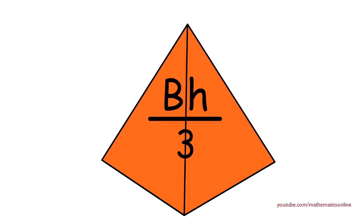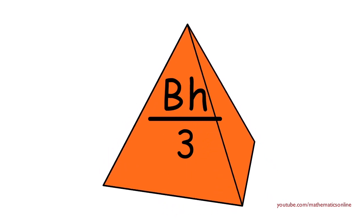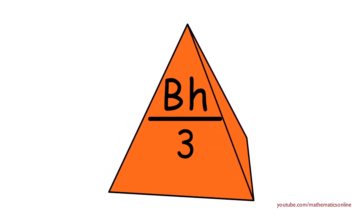One-third times the base times height gives you the volume of a square pyramid. But where does the formula come from?